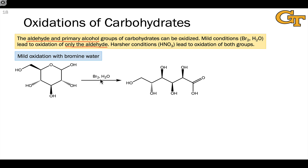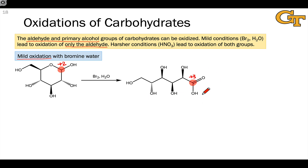When we treat glucose with a solution of elemental bromine in water — relatively mild oxidation conditions because Br2 is not a terribly strong oxidant — this leads to oxidation only at the anomeric carbon to form a carboxylic acid there. Notice what's happened to the oxidation number at the anomeric carbon: we've gone from +2 in the reactant to +3 in the product. This is an oxidation from an aldehyde to a carboxylic acid, which cannot recyclize. Under these bromine and water conditions, the primary alcohol remains unreactive — it's not as easy to oxidize as the aldehyde under these relatively mild conditions.